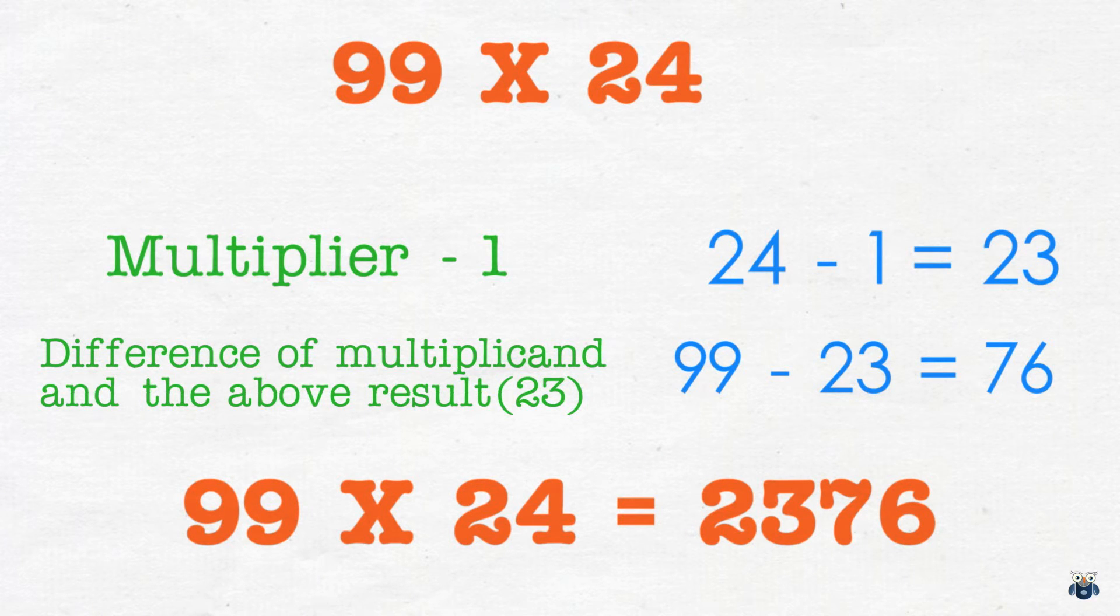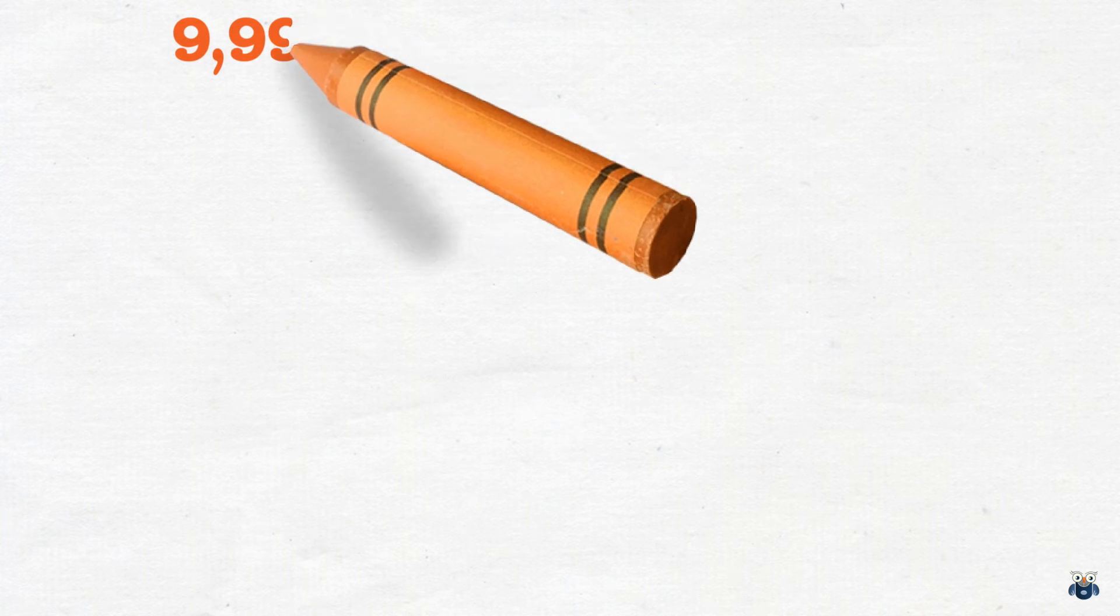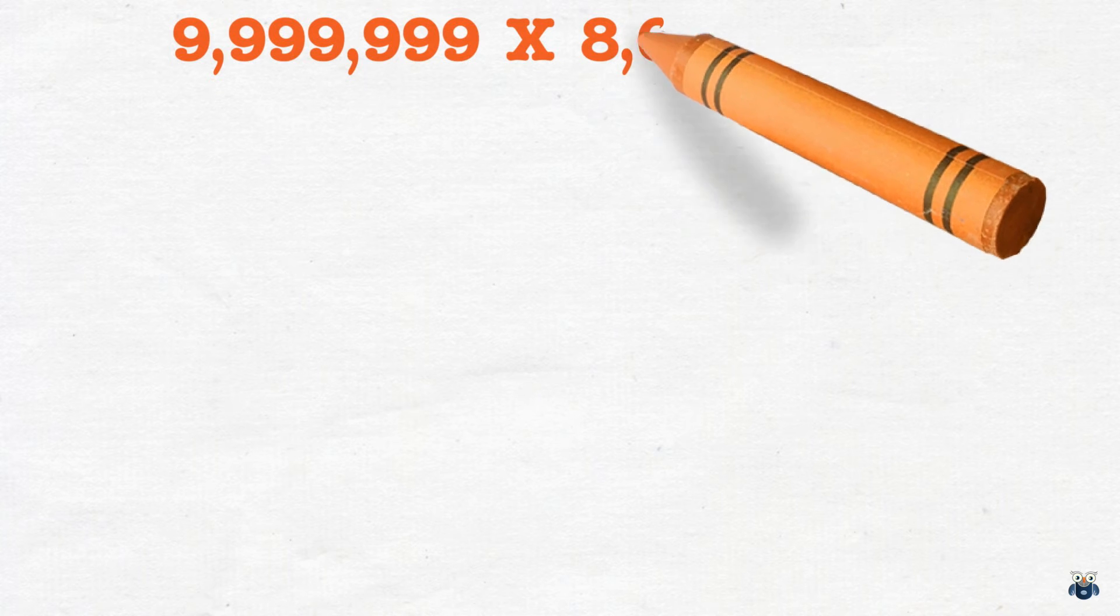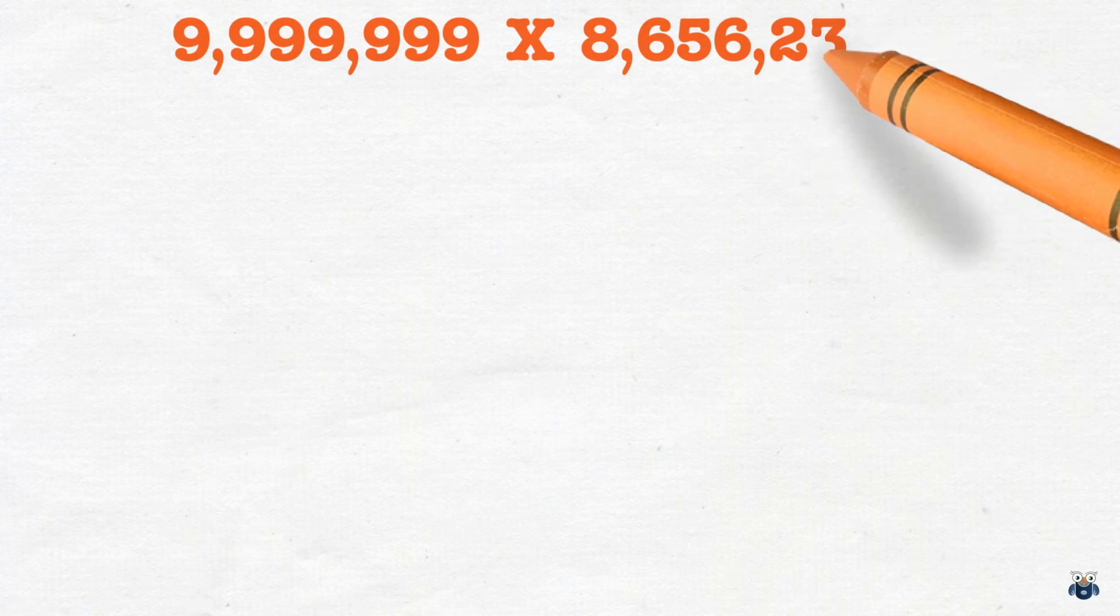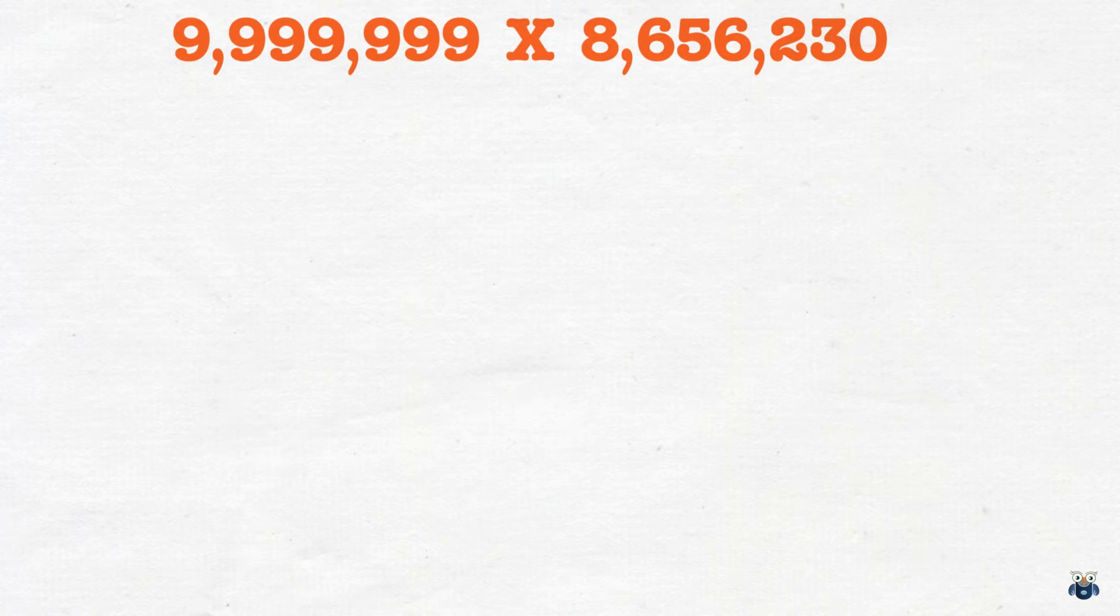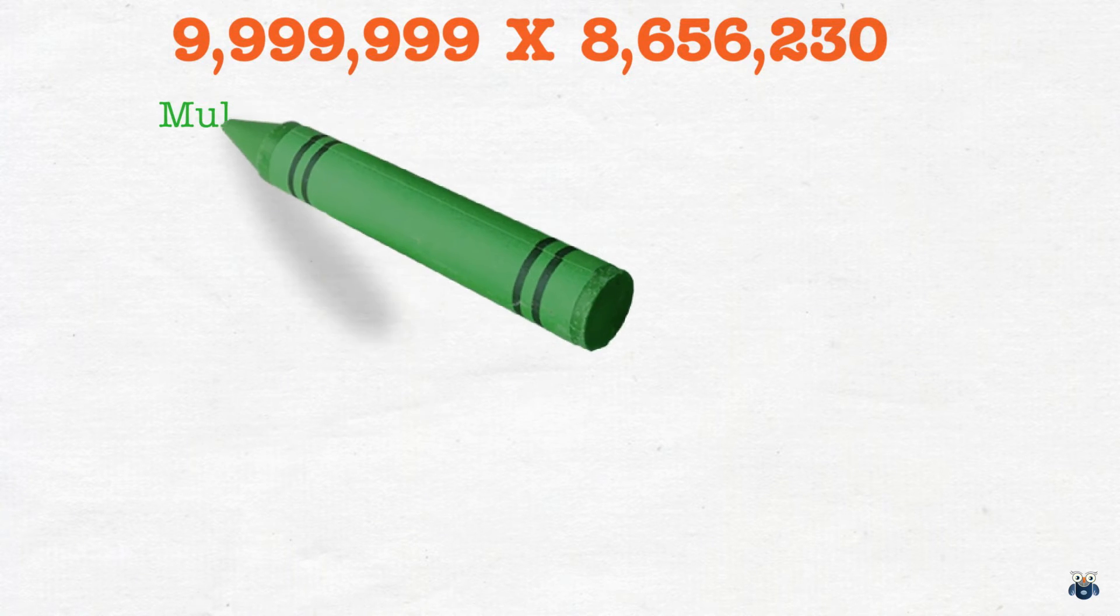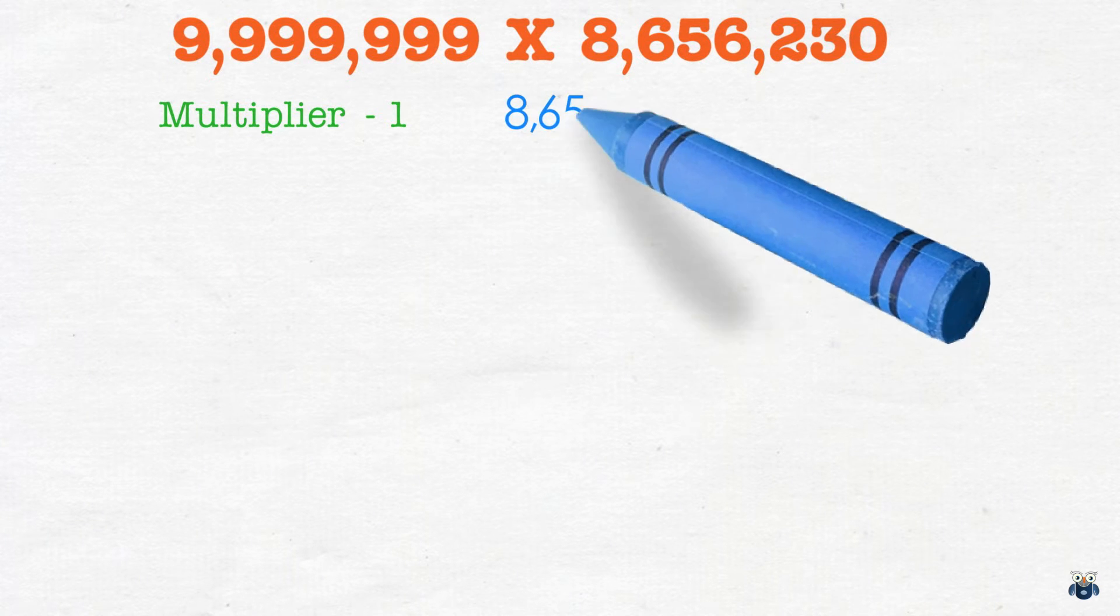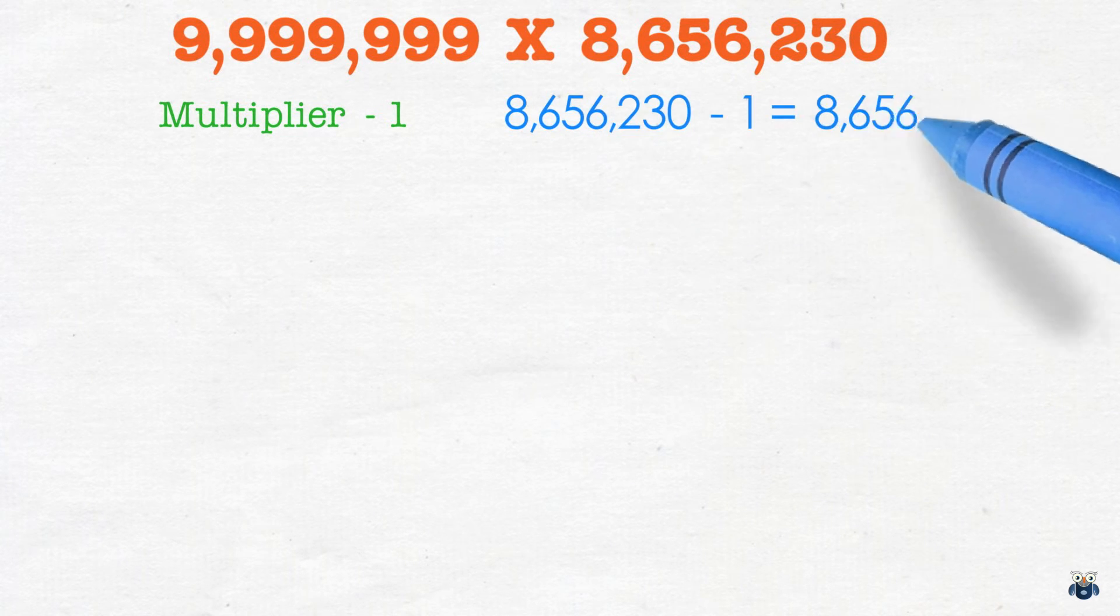With this newly gained confidence let's tackle a much bigger problem. What is 9,999,999 times 8,656,230. So as before for the first part of the result we reduce the multiplier by 1. This gives us 8,656,229.